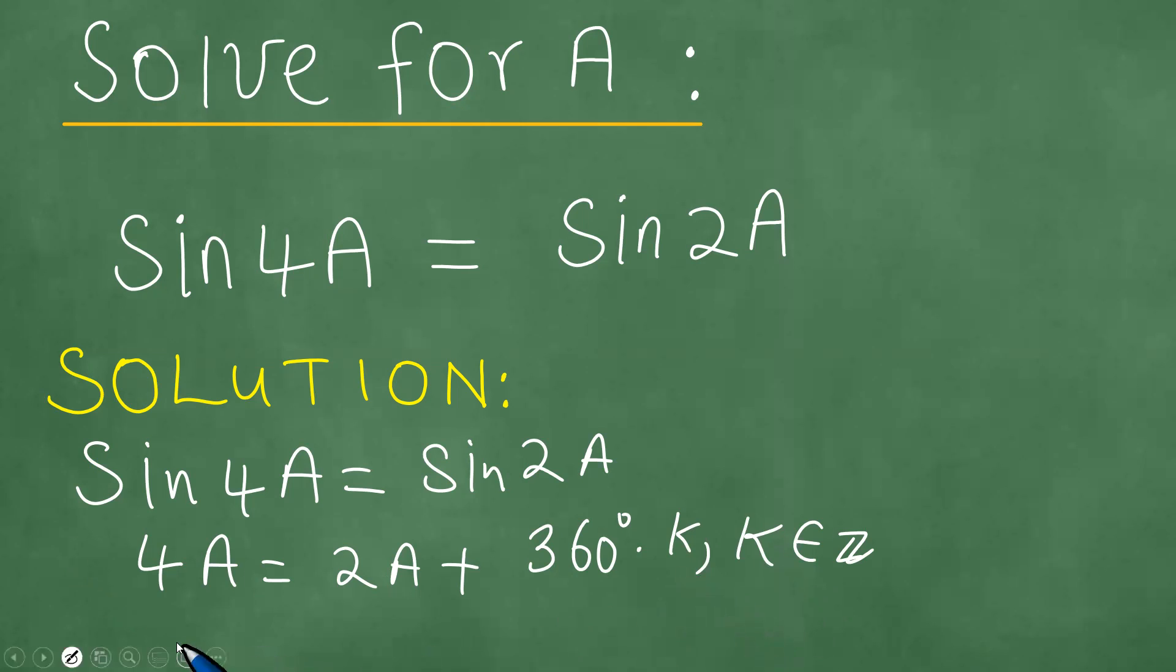What we do next is to simplify this exactly. So how do we simplify this? 4A equals 2A plus 360 degrees times k, where k is in Z.